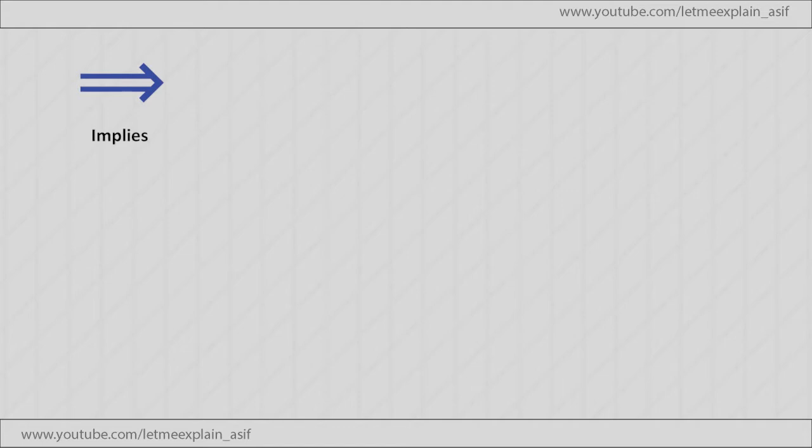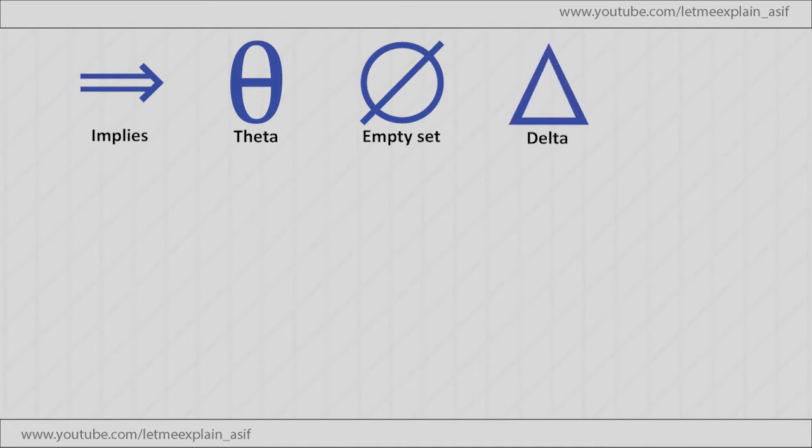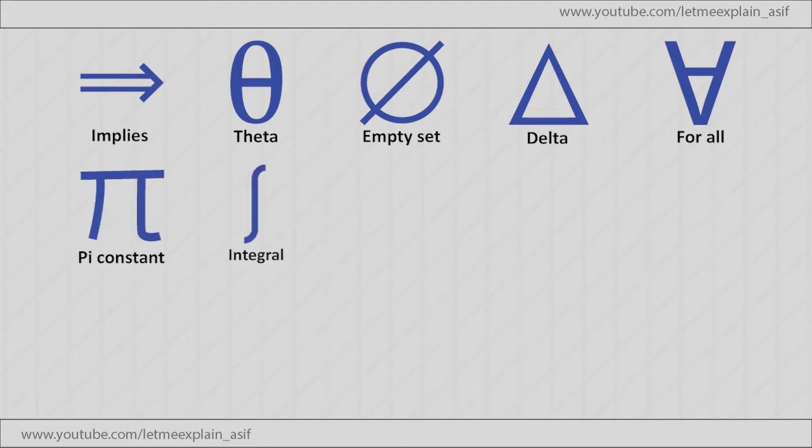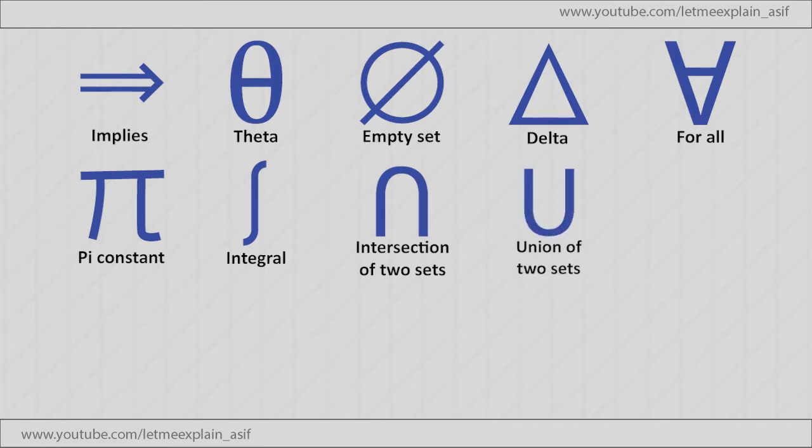Implies, Theta, Empty set, Delta, For all, Pi constant, Integral, Intersection of two sets, Union of two sets, Factorial, Therefore.